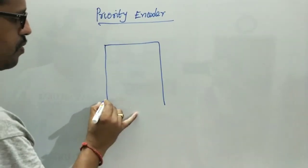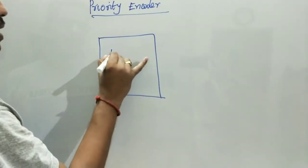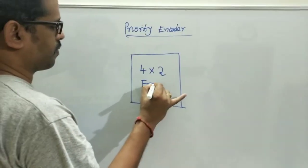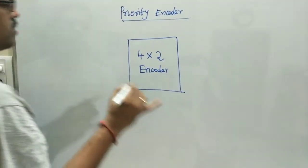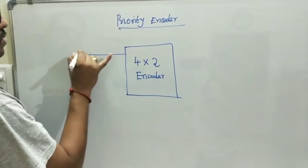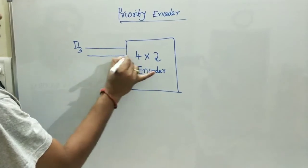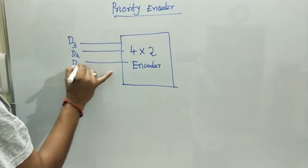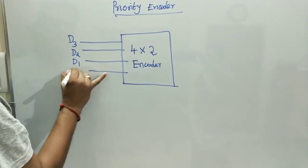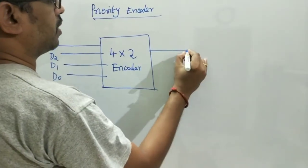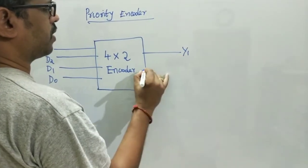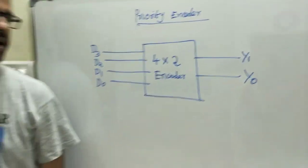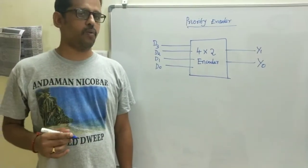We will see a 4 by 2 priority encoder. It has 4 inputs: D3, D2, D1, D0, and 2 outputs: Y1, Y0.